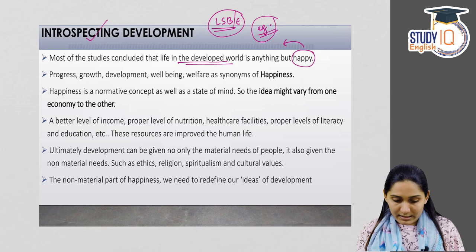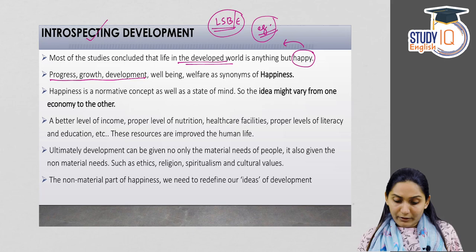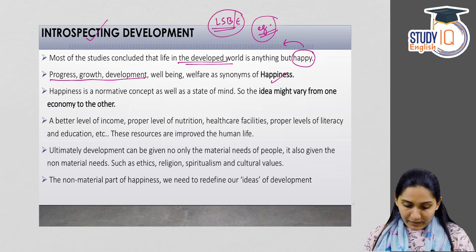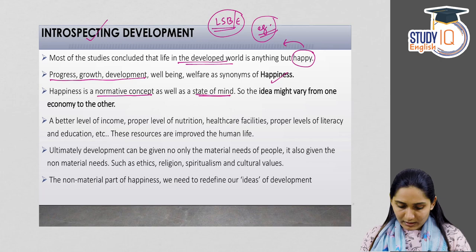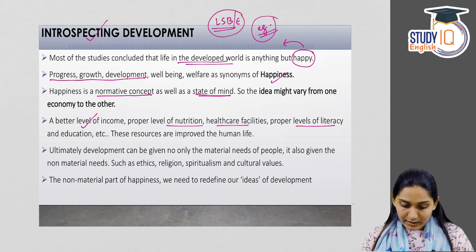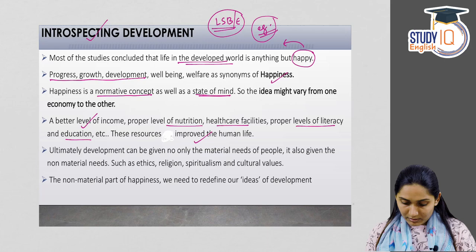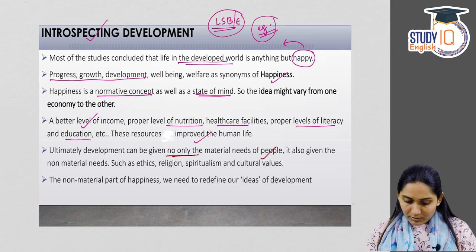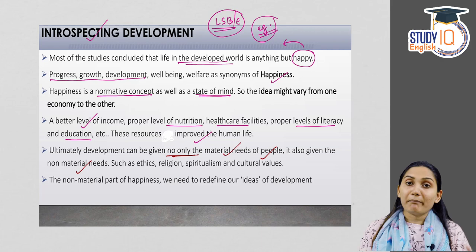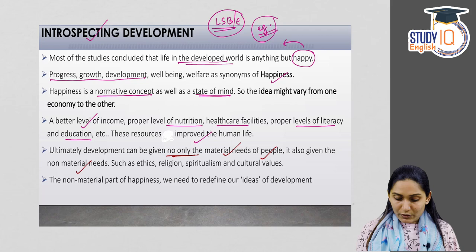Progress, growth, development, and well-being are all synonyms of happiness. Happiness is a normative concept — a state of mind — and it may vary across economies. Better income, proper nutrition, healthcare facilities, and adequate literacy and education have improved human life. But development requires not only material needs to be met but also non-material needs — ethics, religion, spiritualism, and cultural values all form part of development.